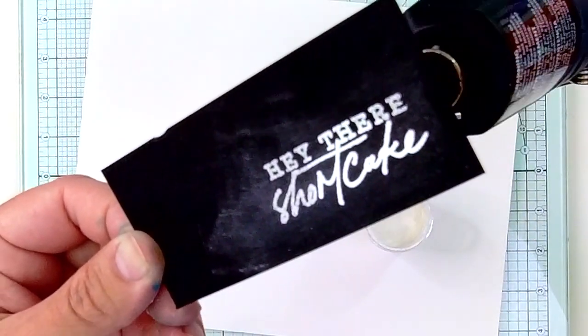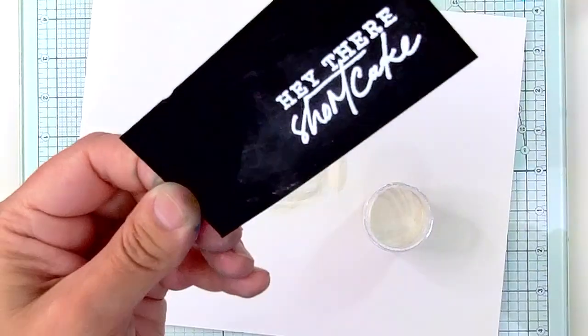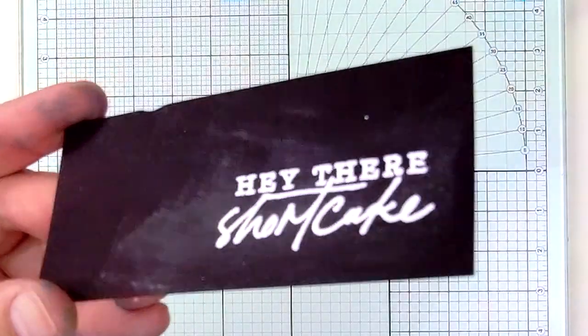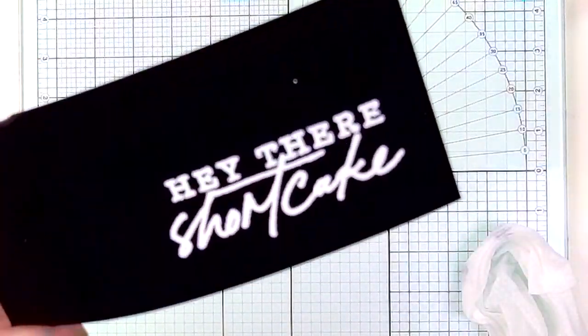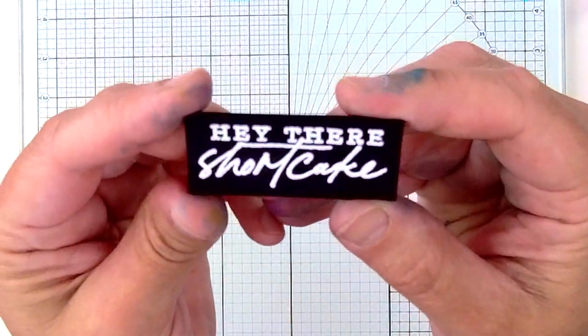When I'm done heat setting it, you're going to see that there's still some powder in the background, and I wanted to show you that an easy way to remove that powder is just by using a baby wipe and wiping it off of the back, and that's all you really need to do.